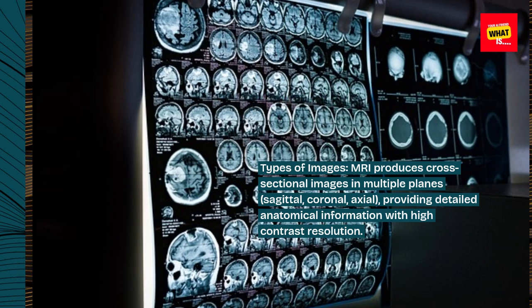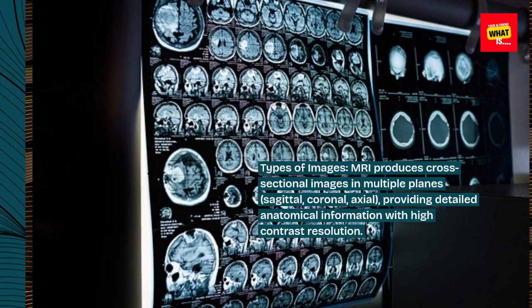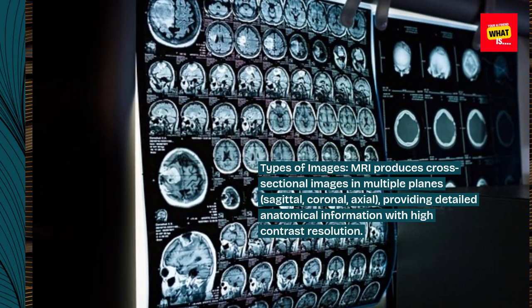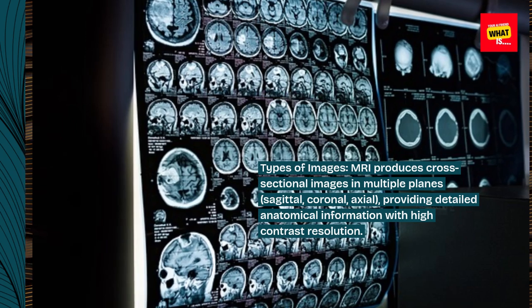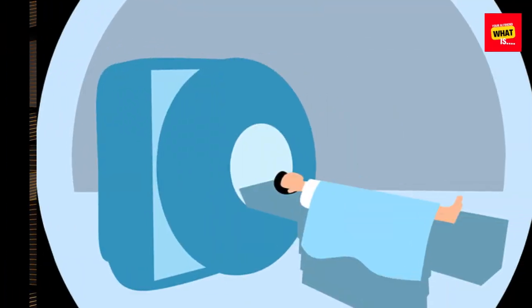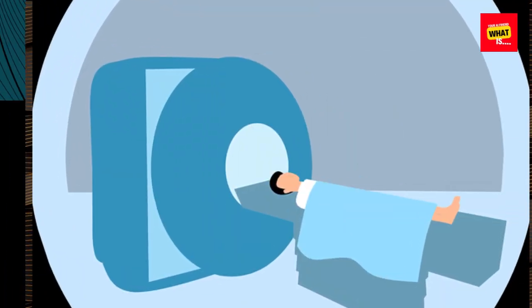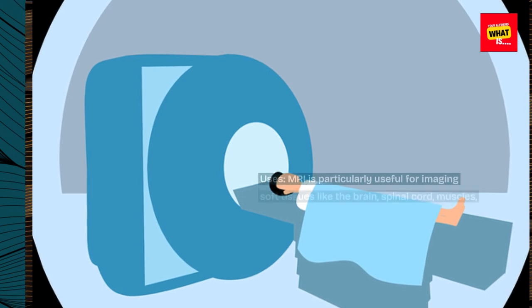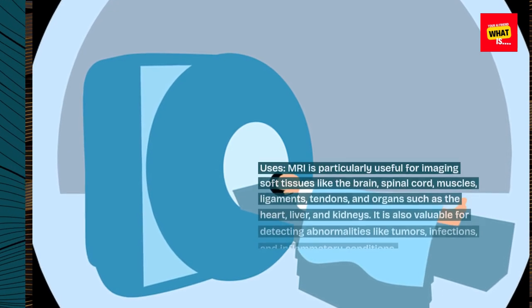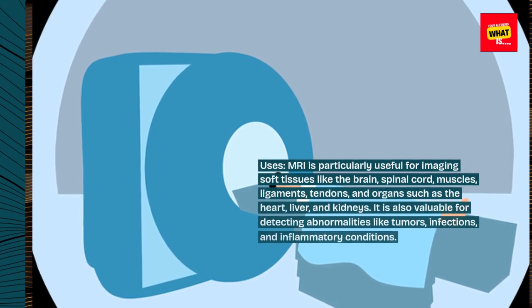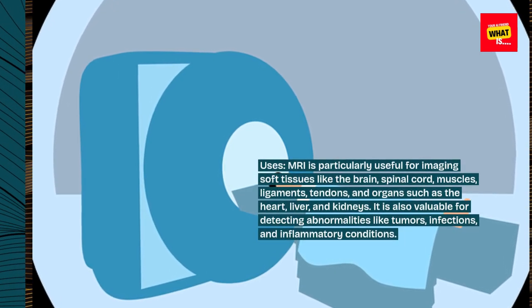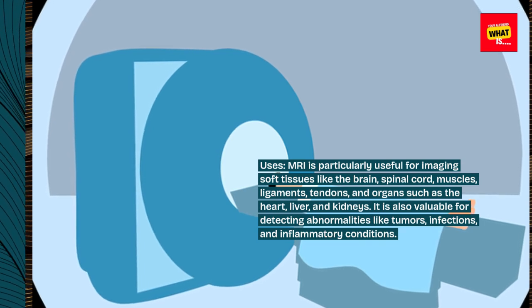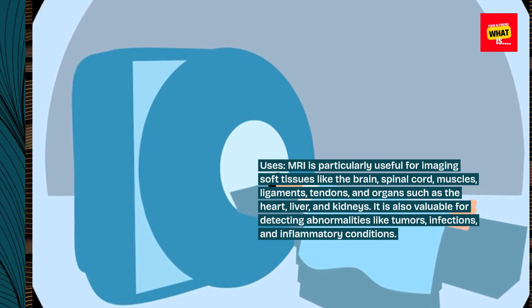sagittal, coronal, and axial, providing detailed anatomical information with high contrast resolution. MRI is particularly useful for imaging soft tissues like the brain, spinal cord, muscles, ligaments, tendons, and organs such as the heart.